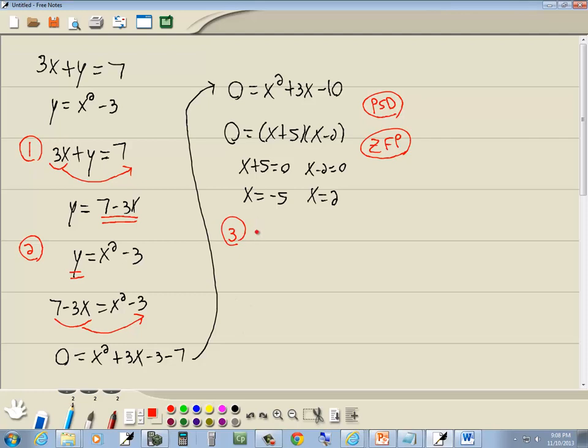Now step 3, we want to plug this back into the equation from step 1. Step 1 will always be solved for the other variable. So we've got x is equal to negative 5, and x is equal to 2. And we're plugging those in to y is equal to 7 minus 3x.